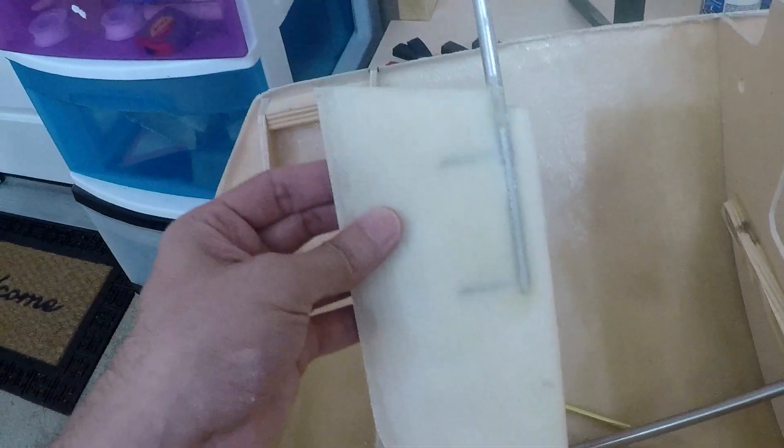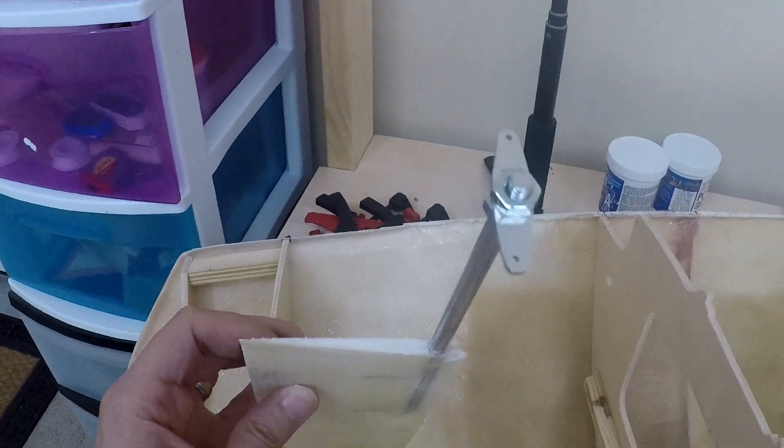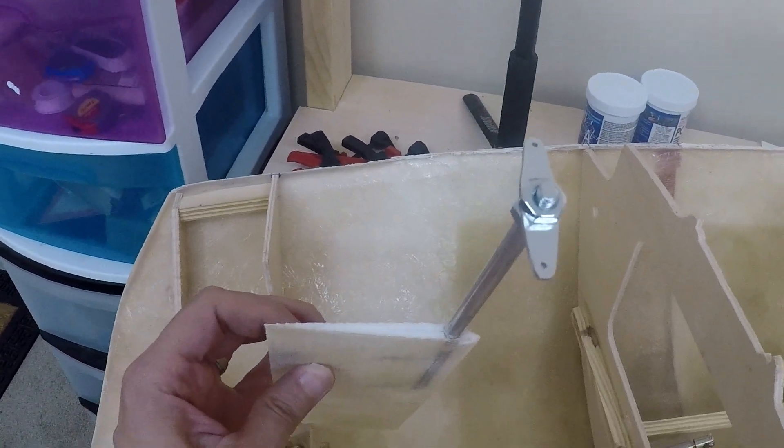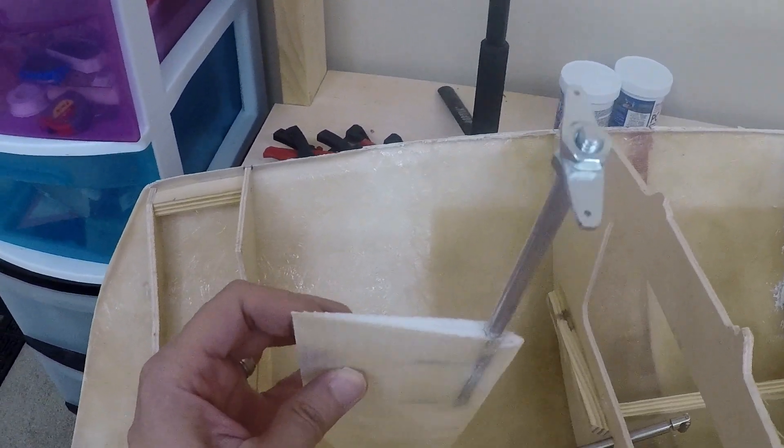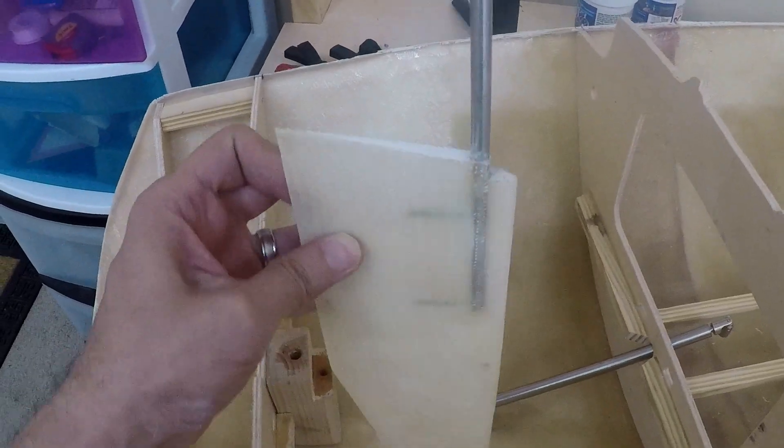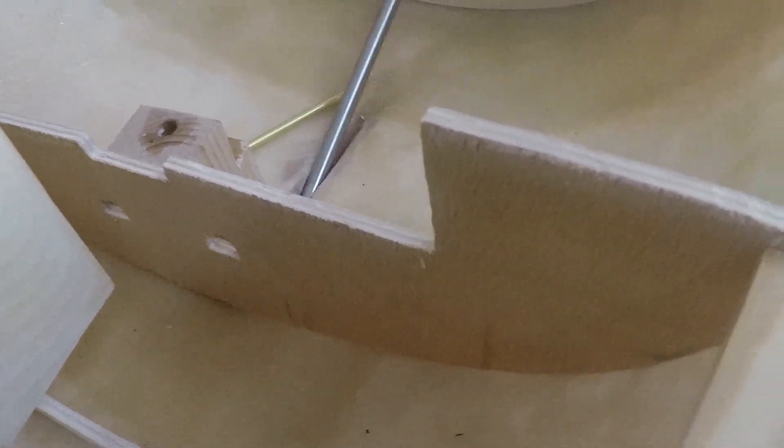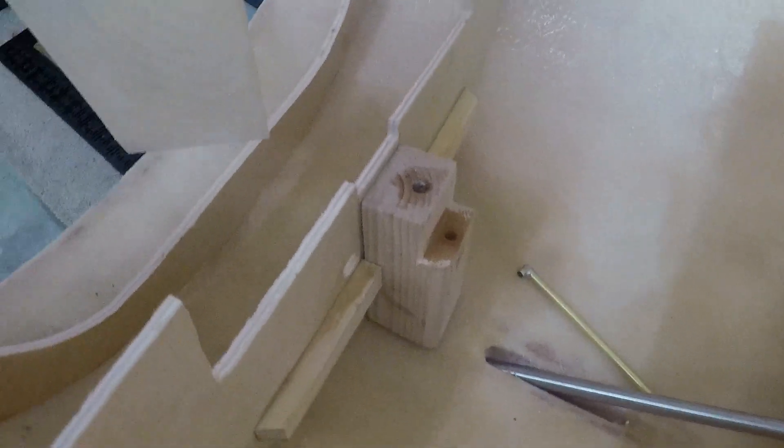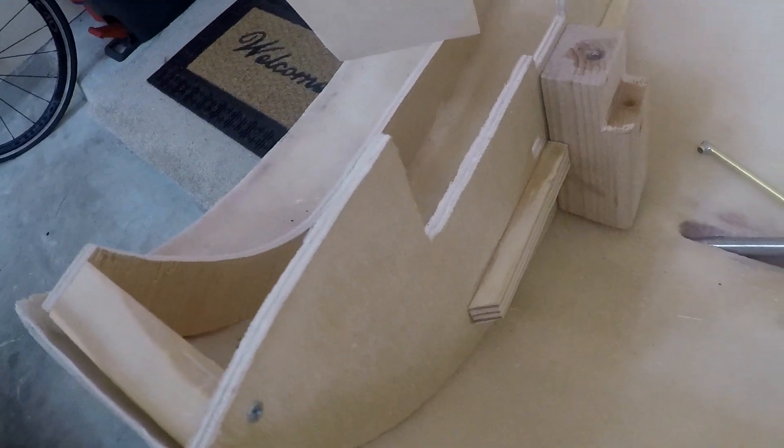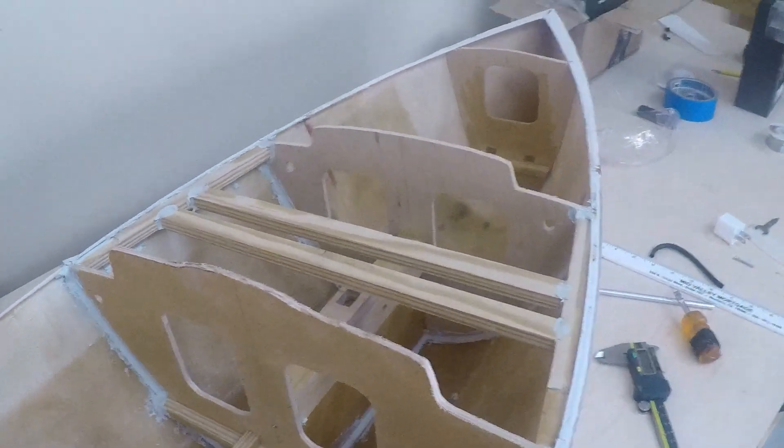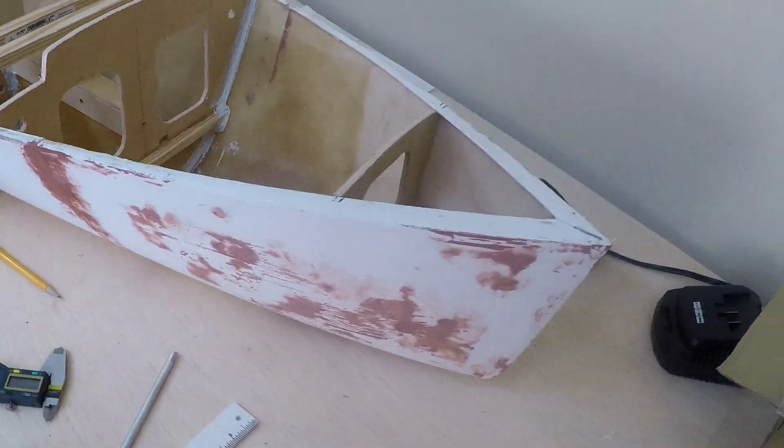Here I have completed the rudder assembly. It has the servo arms and the steering rod is going to be inside the support. The design allows to disassemble the rudder from the hull for easy transportation. And this is the advance so far.